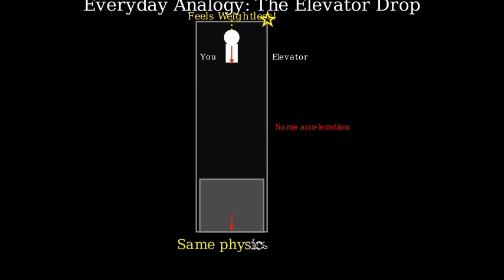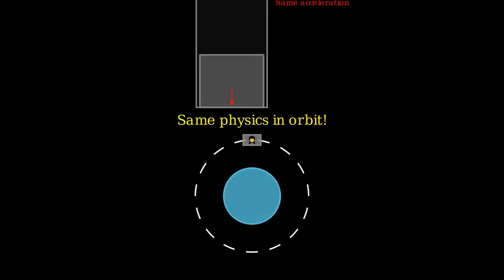This is exactly what astronauts experience, except that their elevator, the spacecraft, is falling around Earth rather than straight down. And this condition is sustained indefinitely as they orbit.